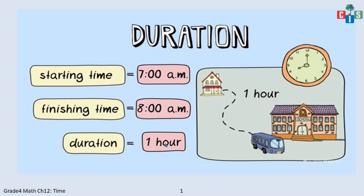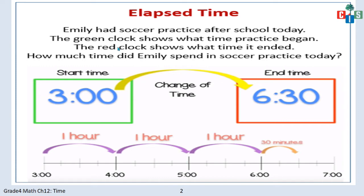The calculation was very easy because it was only 1 hour. Now let's take one more difficult example. Imli had soccer practice after school today. The green clock shows the starting time of the practice, that is 3 o'clock, and the practice ends at 6:30. So you have to find how much time did Imli spend in soccer practice today. The starting point is 3 and the ending time is 6:30 — you have to find the time elapsed or the duration.